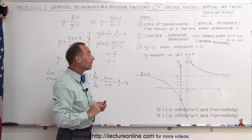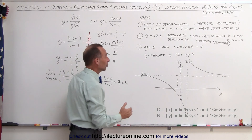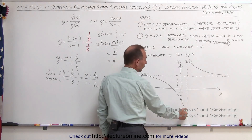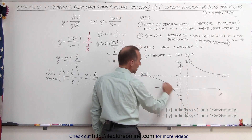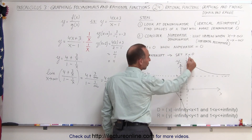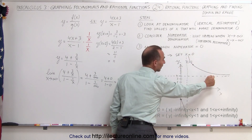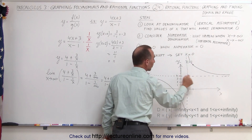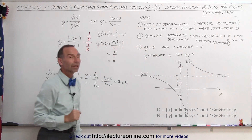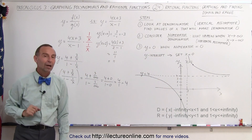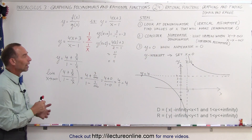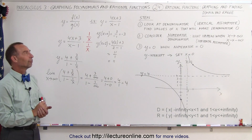That is the shape of that graph — the only possibility, because to the left of the vertical asymptote the graph must be in that region, and to the right it must be in the other, and it can never cross the horizontal asymptote line. And that's how we find the graph of a rational function.